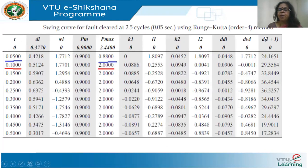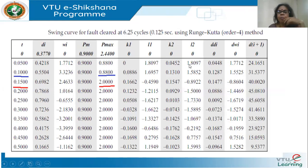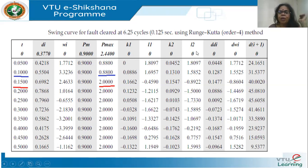Here is the table for a fault cleared at 0.05 seconds (2.5 cycles). I've shown it for fourth-order Runge-Kutta with just two coefficients K1 and K2 displayed due to space constraints. P_max = 0.88 at t = 0.05 s; at t = 0.1 s the fault is cleared and P_max becomes 2. For the 6.25-cycle case, clearing is at 0.125 s, so at t = 0.1 s I use P_max = 0.88, and at t = 0.15 s I use 2. You simply need to track the correct P_max at each step.